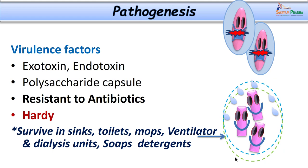Let us look into pathogenesis. Organisms like Pseudomonas and Acinetobacter produce exotoxins or have lipopolysaccharide endotoxin responsible for causing endotoxic shock and septicemia. The polysaccharide capsule of Pseudomonas prevents drug entry into the organism — one of its drug resistance mechanisms. These organisms are also found in sinks, toilets, mops, floors, ventilator units, dialysis units, soaps, detergents, and antiseptics.